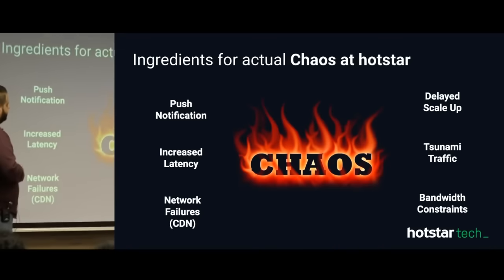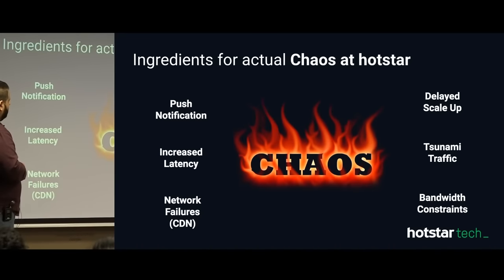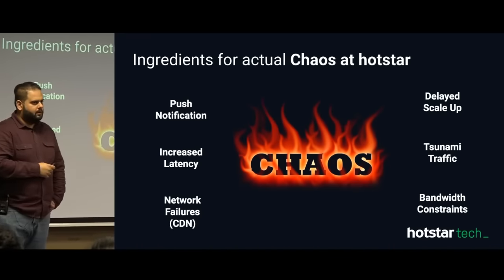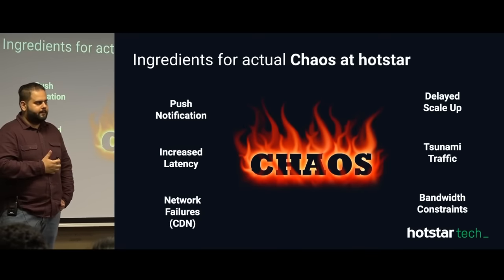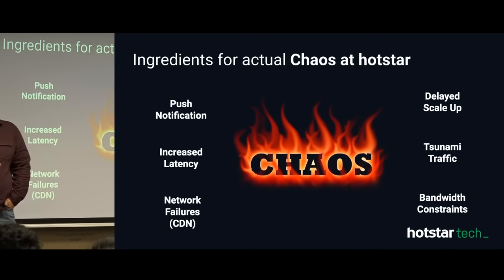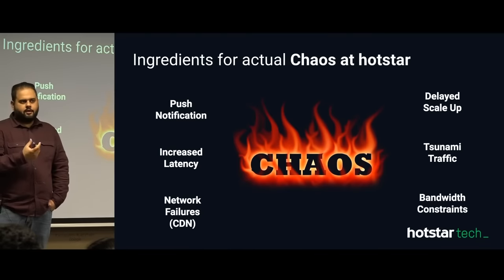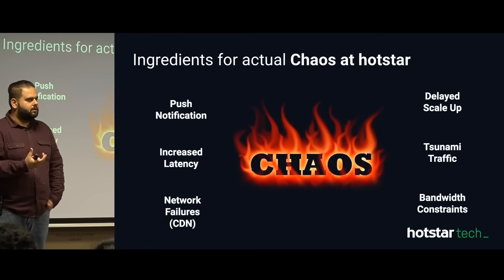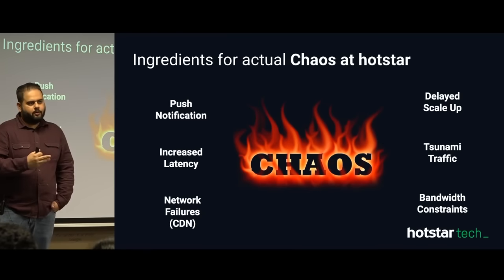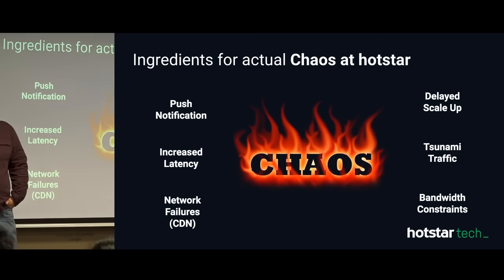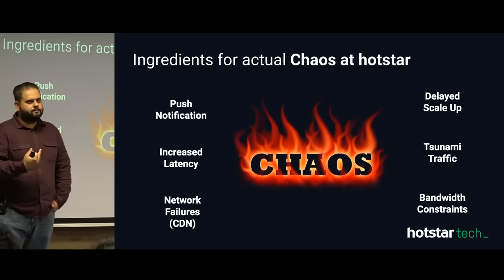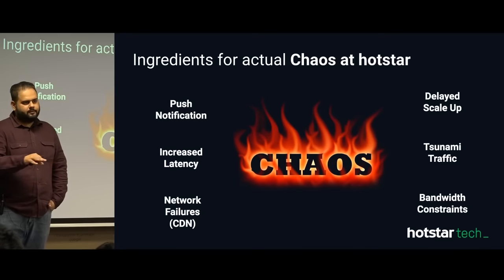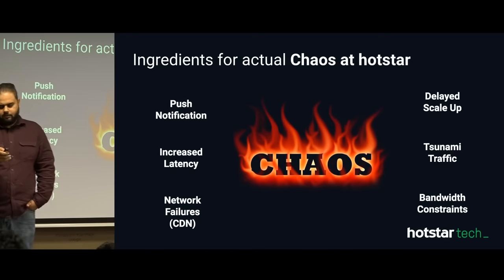These are the ingredients for chaos. Chaos engineering — in one line — is finding breaking points in your system, the art of breaking things so that you know a failure is about to happen and how you can overcome it without impacting the user.